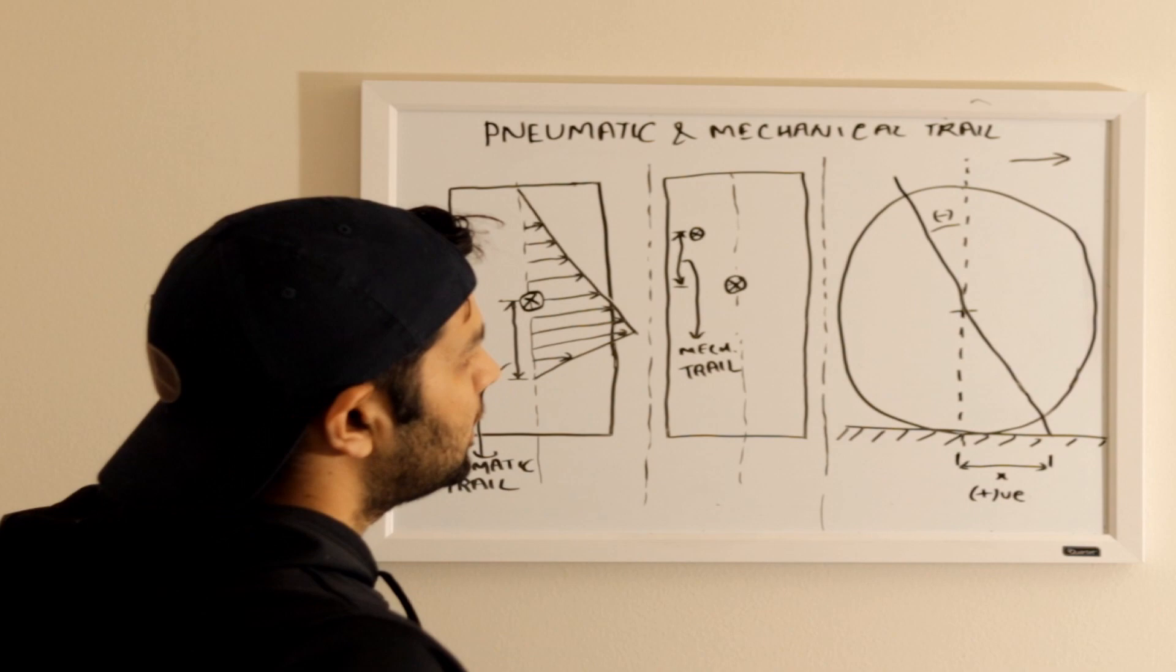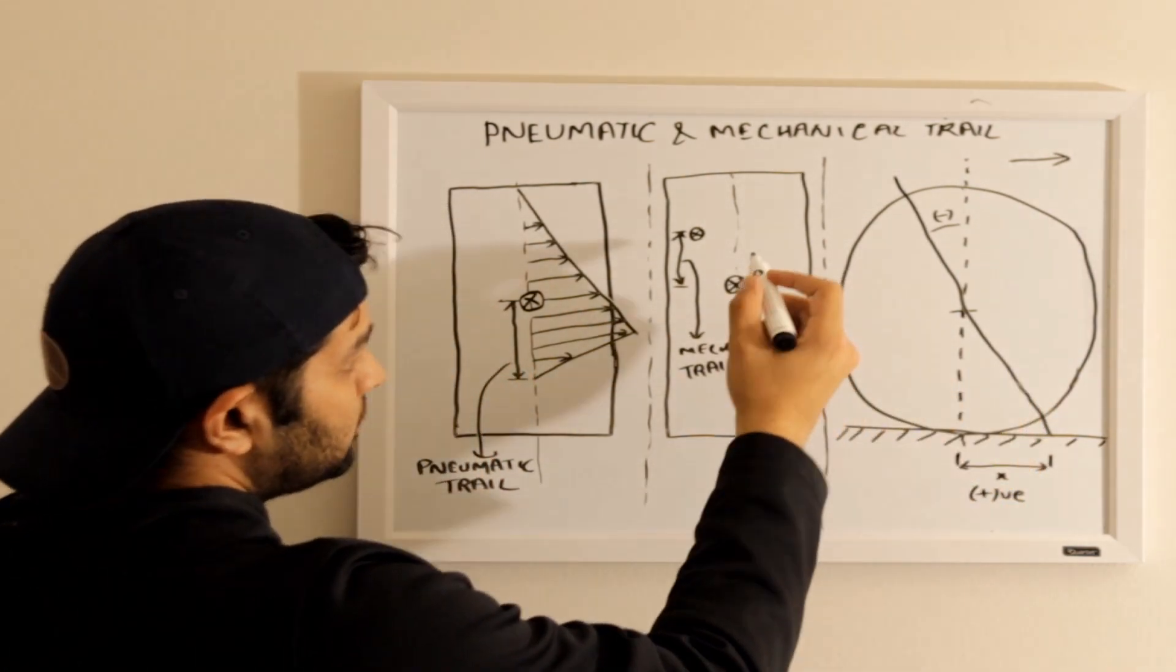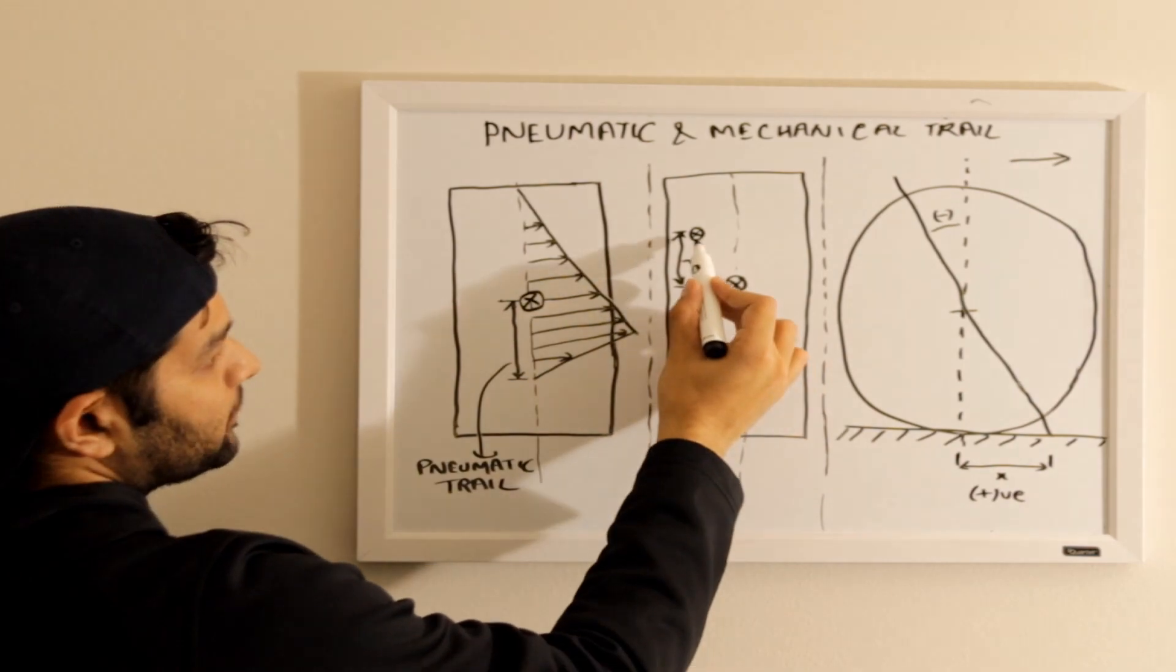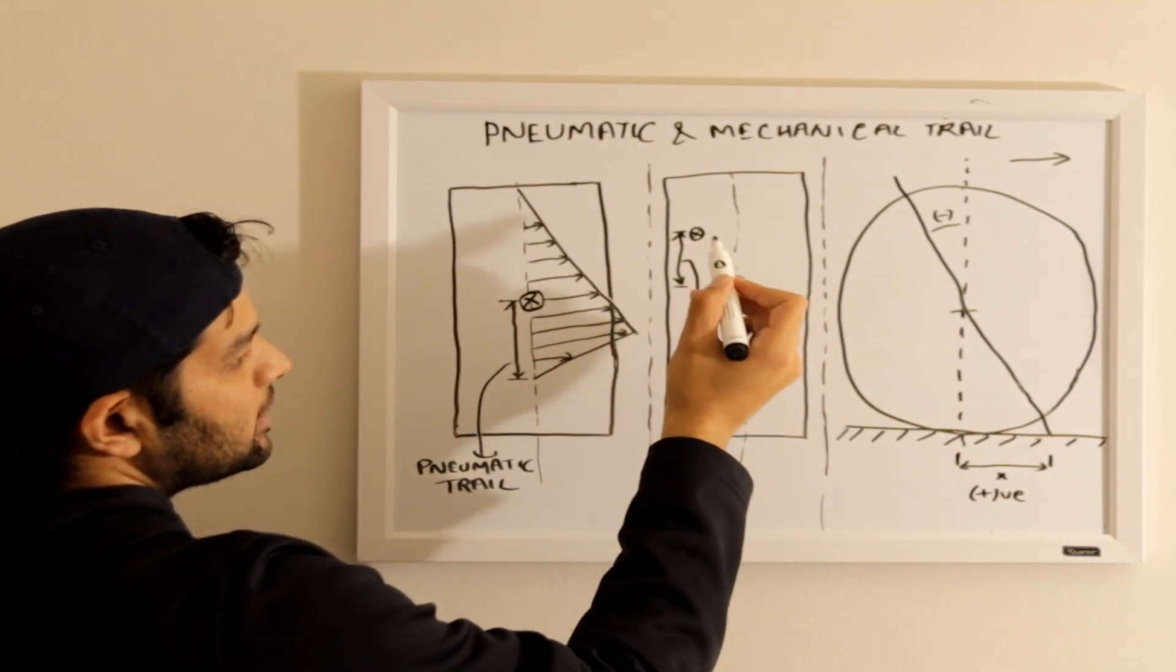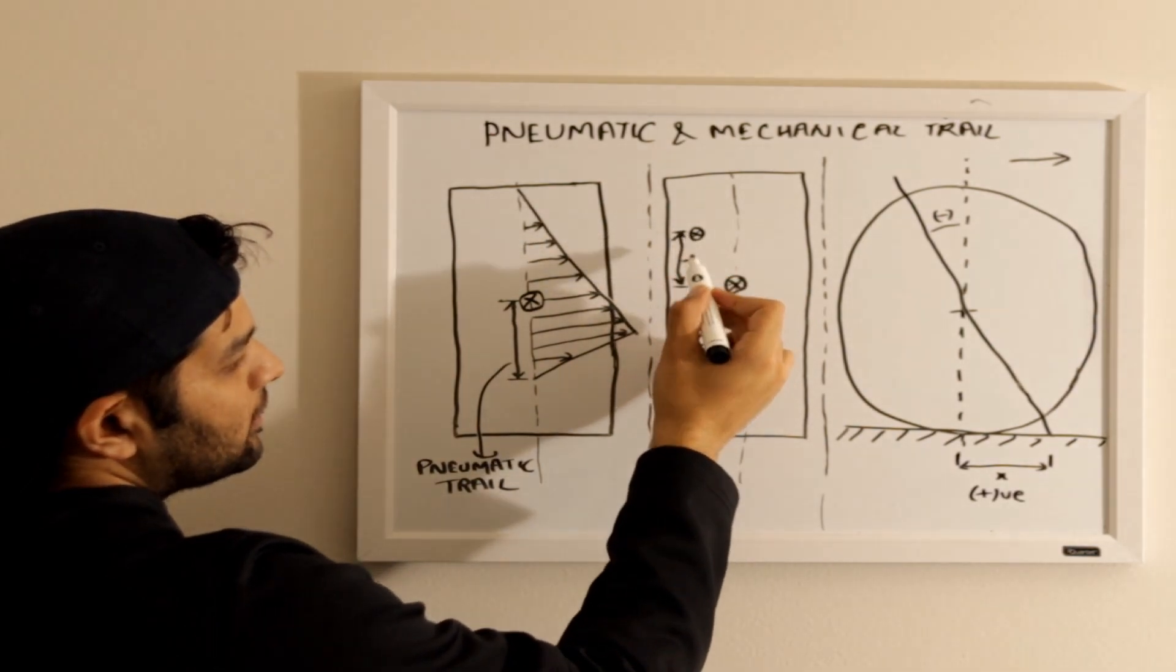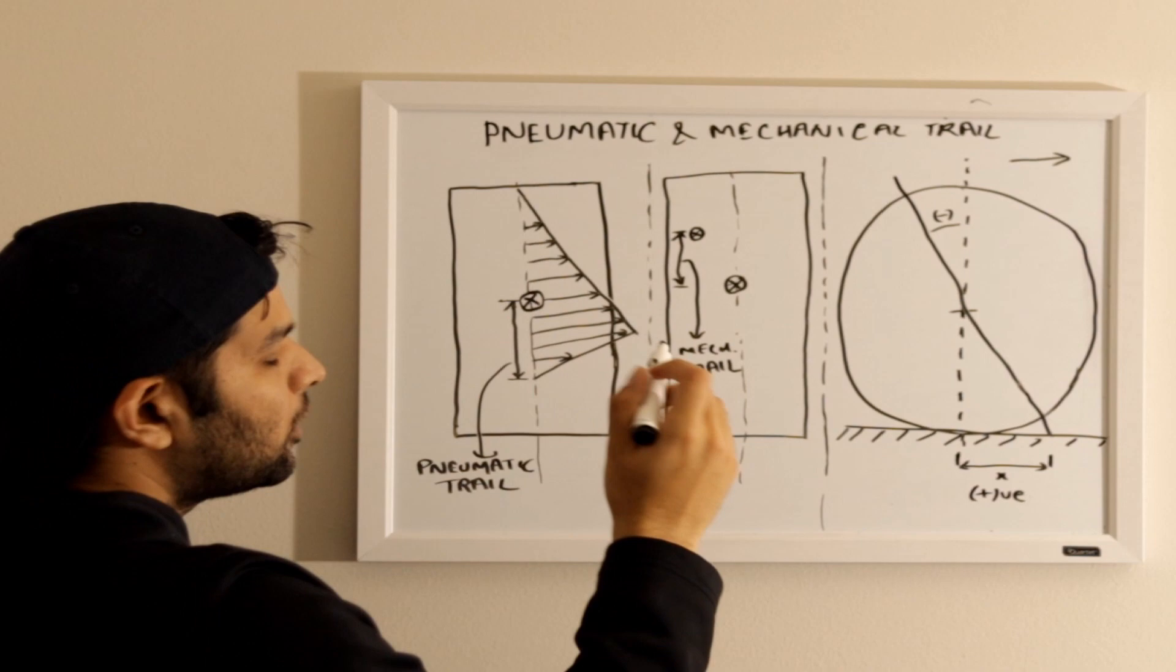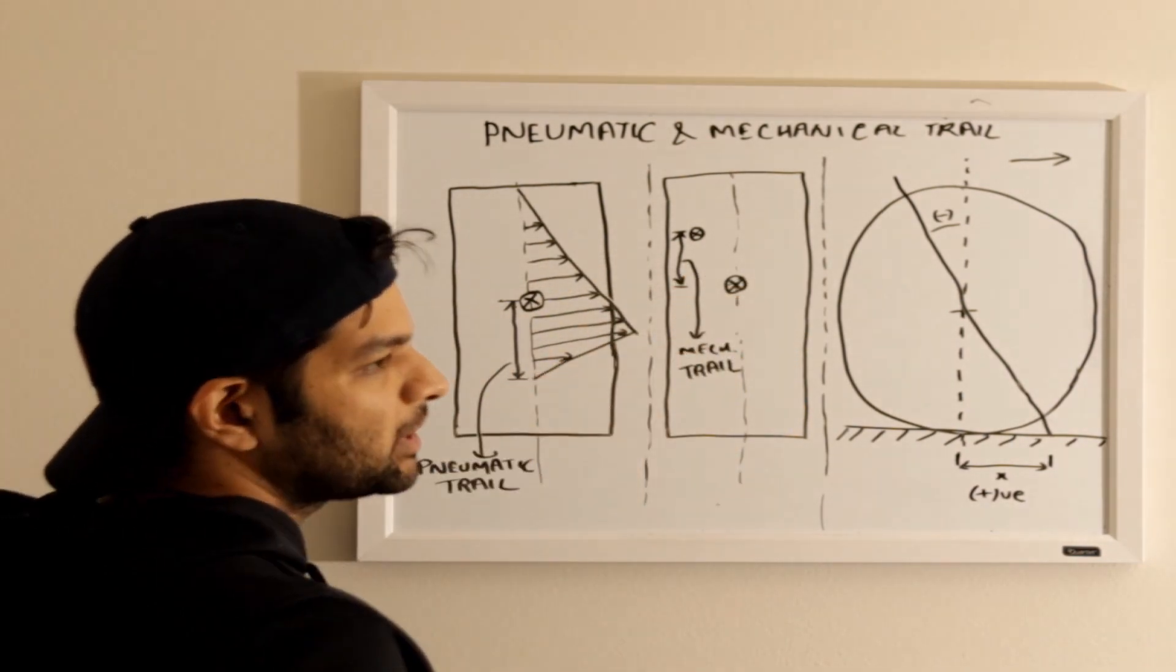This will be positive and this will be called mechanical trail. If we look from the top view for this tire, the contact point for this kingpin will be this one, and there will be a perpendicular distance from this contact point to the center of the tire, and this distance is known as mechanical trail.